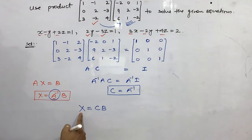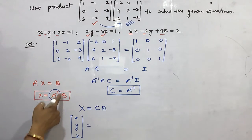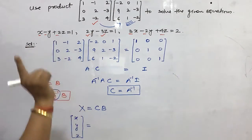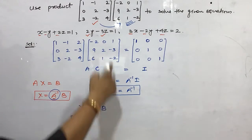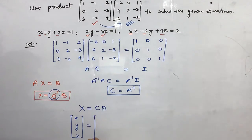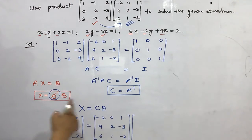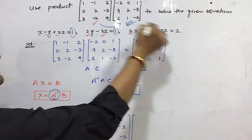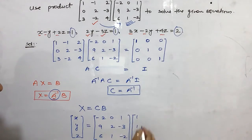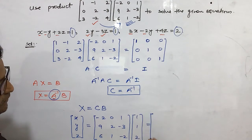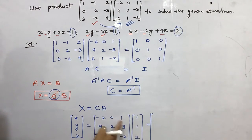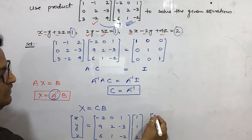So X equals A inverse times B, and A inverse is C. Matrix C is: -2, 0, 1 in the first row; 9, 2, -3 in the second row; 6, 1, -2 in the third row. Matrix B is: 1, 1, 2. Now we multiply row by column: -2×1 + 0×1 + 1×2 = 0, so the first element is 0.